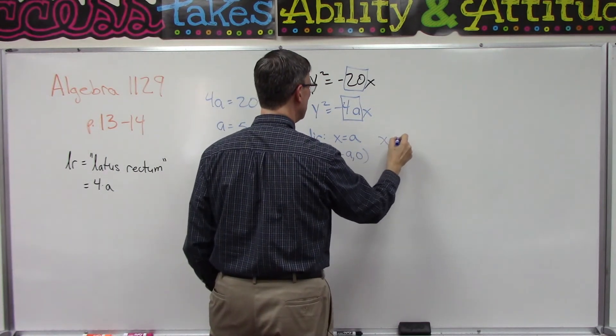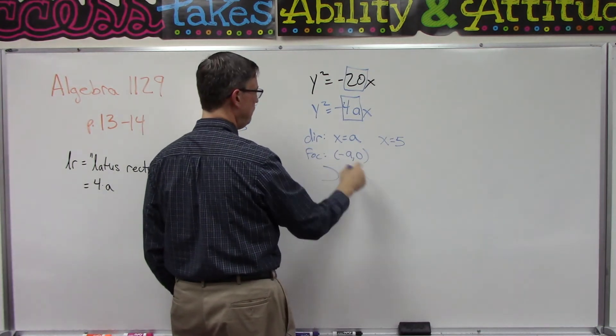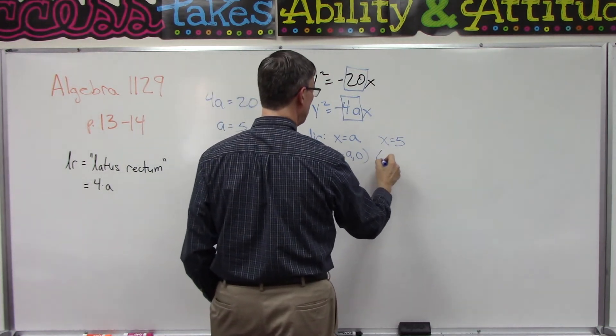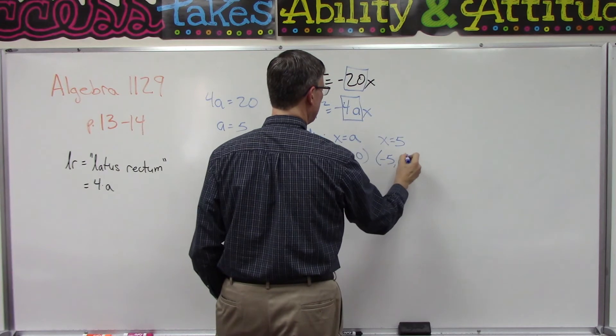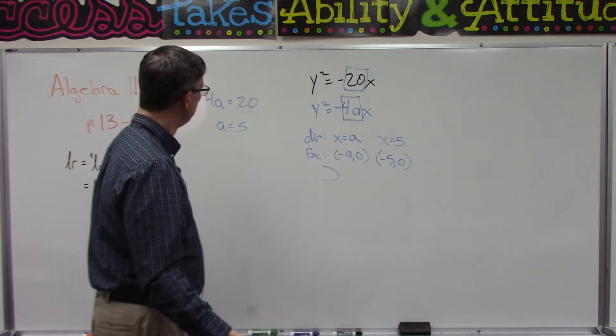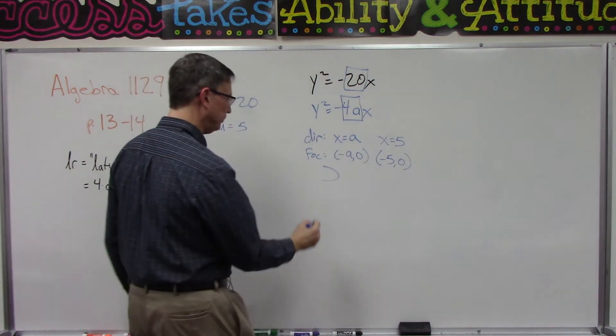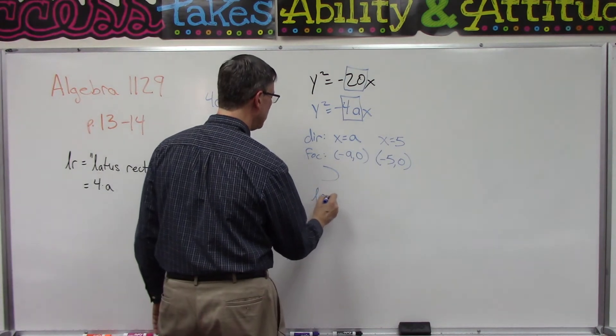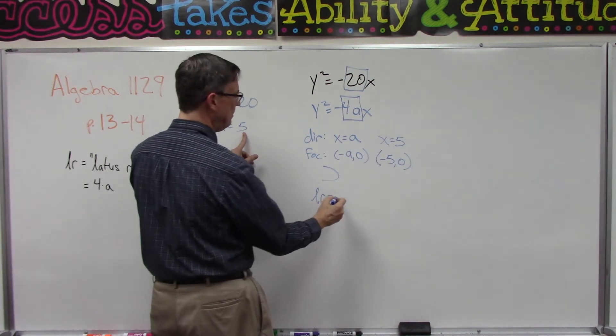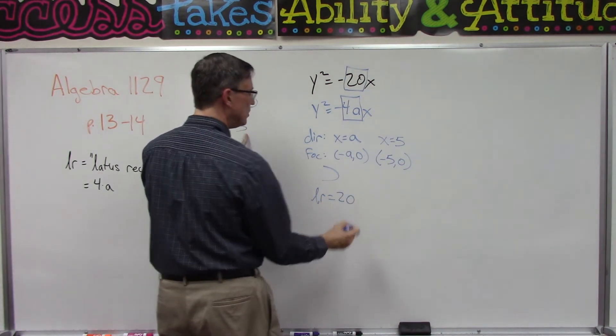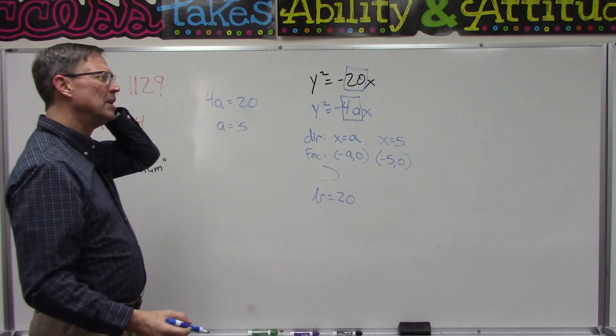Right here the directrix is going to be x = 5. The focal point is going to be the point (-5, 0), and then the latus rectum is going to be 4 times that, which is going to be 20.